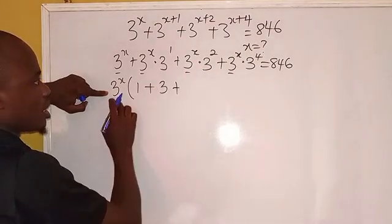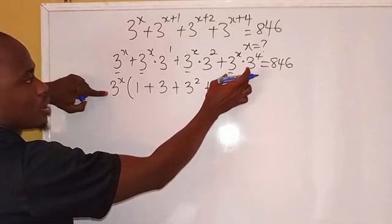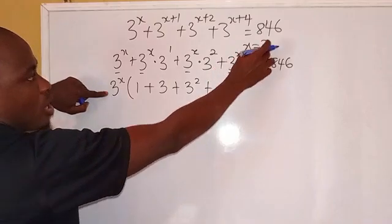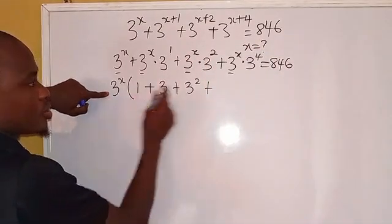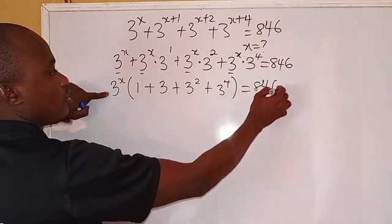So this divided by this we're going to have 3 to the power of 2, plus 3 to the power of 4, then we have 846.